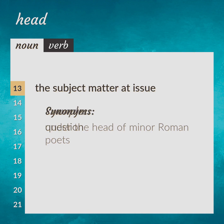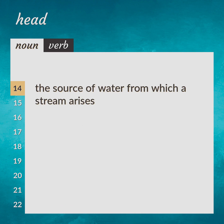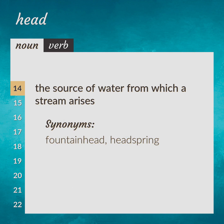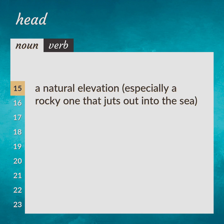The source of water from which a stream arises. They tracked him back toward the head of the stream. Synonyms: fountainhead, headspring. A natural elevation, especially a rocky one that juts out into the sea. Synonyms: foreland, headland, promontory.